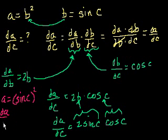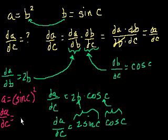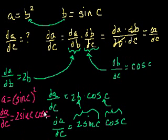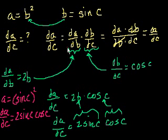So the derivative of a with respect to c — taking the derivative of the outside of sine of c squared gives 2 sine of c, times the derivative of the inside, which is cosine of c. We end up with the exact same result. When I take the derivative of sine of c squared and get 2 sine of c, I'm really just taking the derivative of a with respect to b — that's 2b or 2 sine of c. And when I take the derivative of the inside, I'm really taking the derivative of b with respect to c.